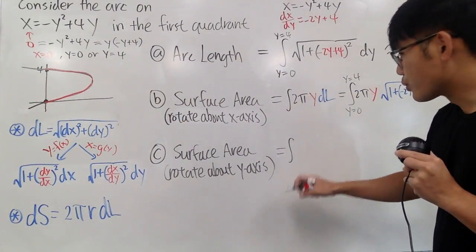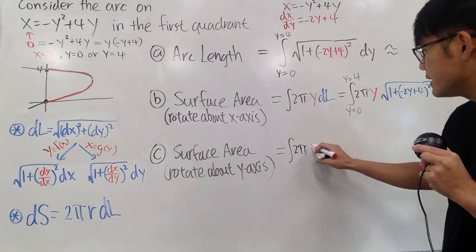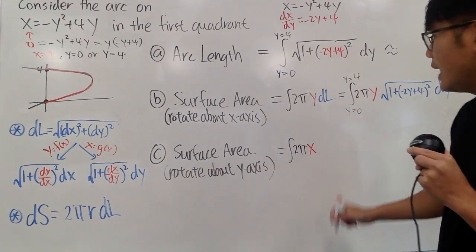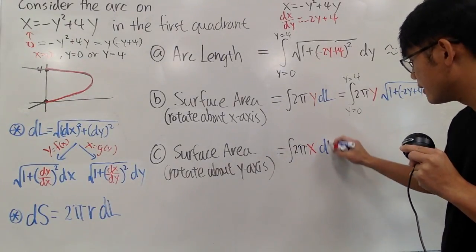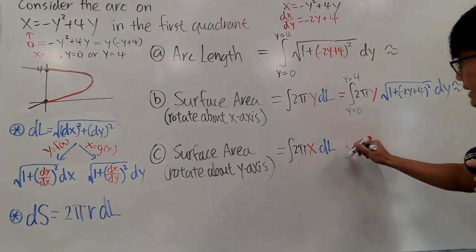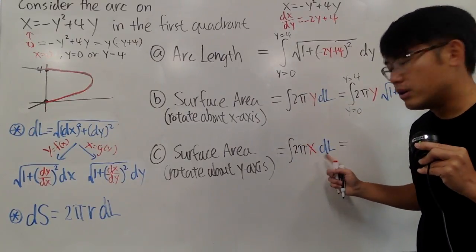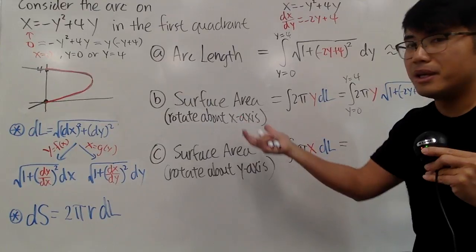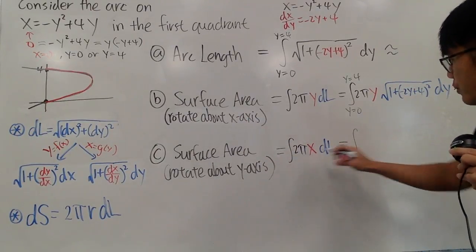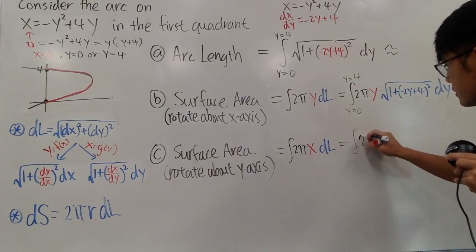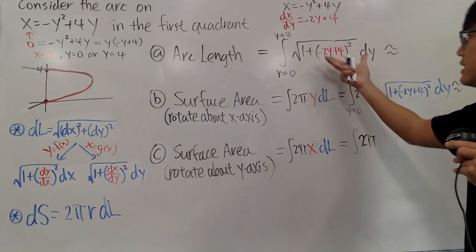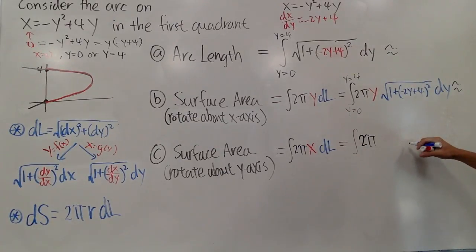So, let's do the same thing. Integral, 2 pi, but this time it's x. Right? 2 pi x. And we have to have the dl again. And, we'll see that so far we cannot finish the integral yet. We cannot put down the limits of integrations because dl doesn't really make that much sense. I don't know which world I'm in yet. Right? Alright, put down the integral. 2 pi is 2 pi, of course. dl, again, it's this. So, we'll just write that down right here. Let me just put it down here. Square root of 1 plus parentheses, negative 2y plus 4, square, and we have the dy here.